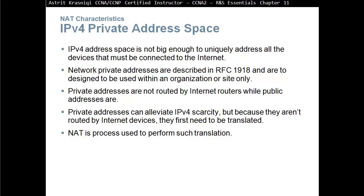RFC 1918 said some ranges of IPv4 addresses are not to be assigned for public use. They are only for private use and will be used within the organization only. When they go to the internet or another network they need to be translated. So private addresses are not routed by internet routers, while public addresses are. Private addresses can still be routed within the organization, but internet routers are configured not to allow any private addresses to appear on the internet.